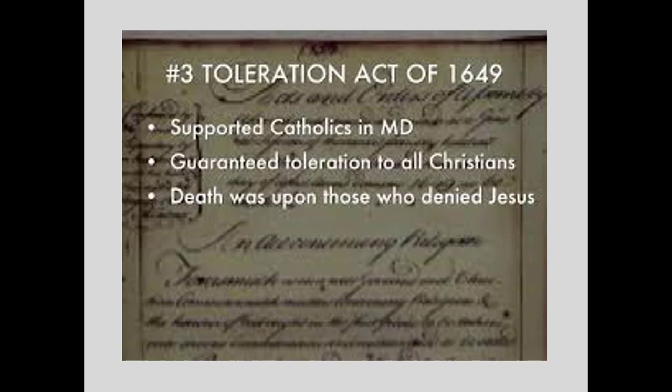The Toleration Act is an early example of allowing religious toleration — it supported Catholics in Maryland and guaranteed toleration to all Christians. Death was the penalty for those who denied Jesus, so maybe not quite as benevolent as we'd like, but they were getting there. This is the precursor to freedom of religion — allowing all types of worship, not just a state church.